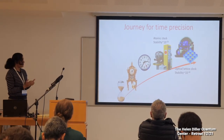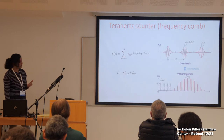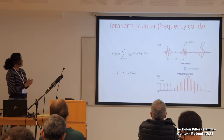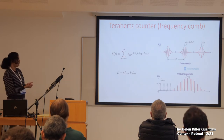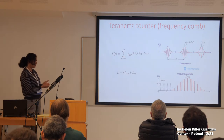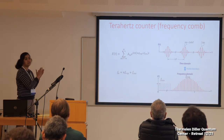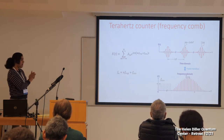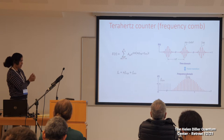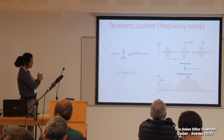All these advancements have been made possible with the invention of the frequency comb, which is nothing but a pulsed laser that emits a train of pulses. If you do a Fourier transform of a pulse train, you will see that it generates discrete frequency lines in the frequency domain, and these lines are separated by the repetition rate.